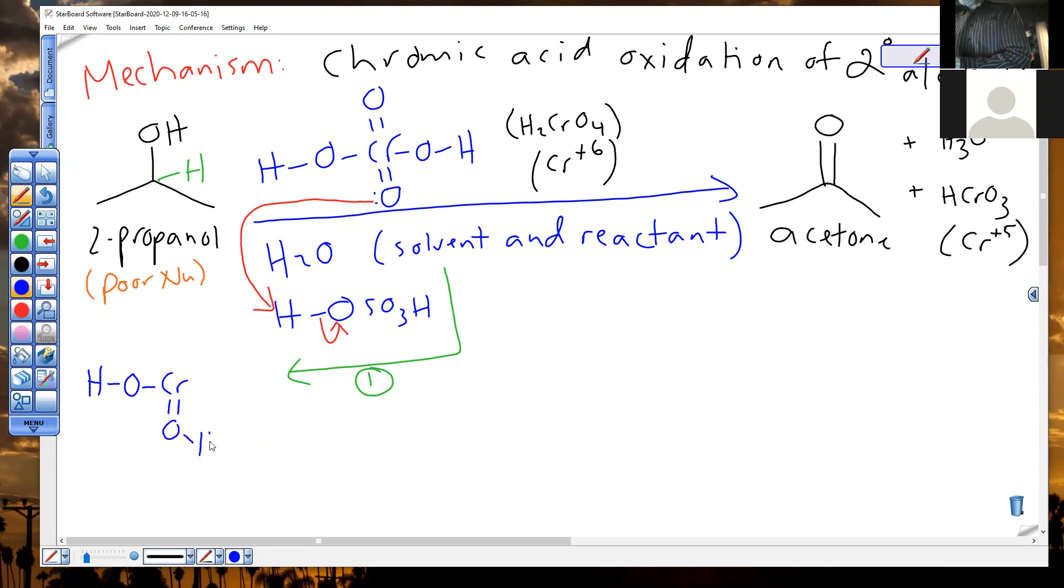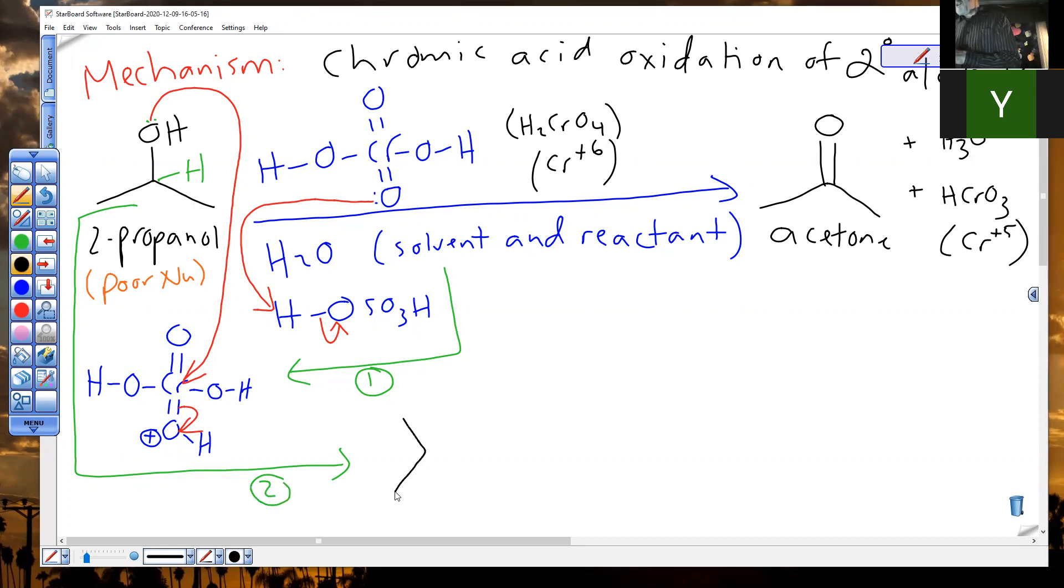Chromium is now much more reactive. That oxygen is pulling electrons more strongly than it used to. 2-propanol sees this chromium and says, yeah, I'll attack that now. I got a lone pair. I'm not much of a nucleophile, but when I see a chromium like that, I'm coming. And there's how we neutralize oxoniums. You attack the adjacent atom and give them a pair of electrons back. Step two, your nucleophile is attacking the chromium. I'm going to put my alcohol a little sideways here.